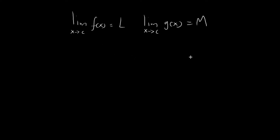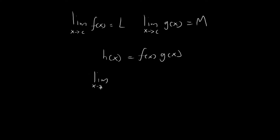In this video, we're going to prove something kind of similar to what we did in the last video. Given that we have two functions f and g, where both functions have limits as x tends towards c, equal to L and M respectively, we define another function h where h(x) = f(x)·g(x). What I want to prove is that the limit as x tends towards c of h(x) equals L times M.